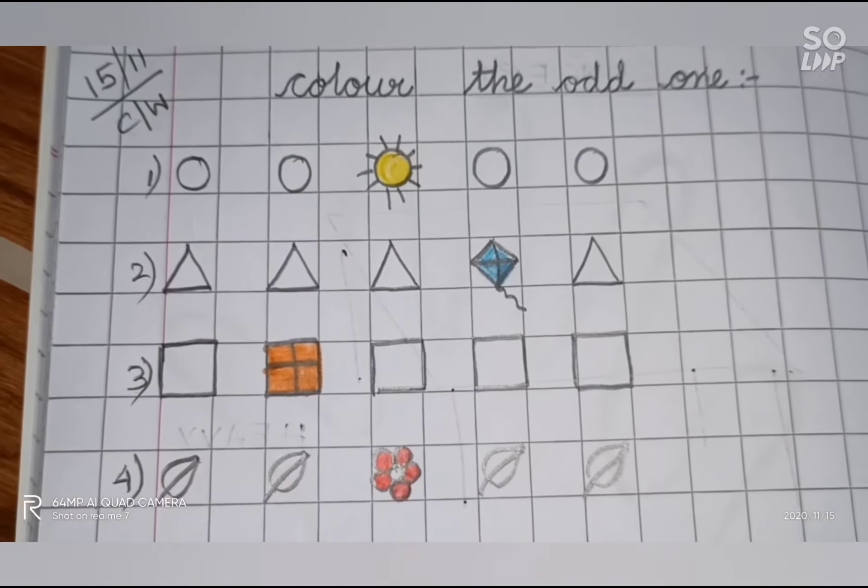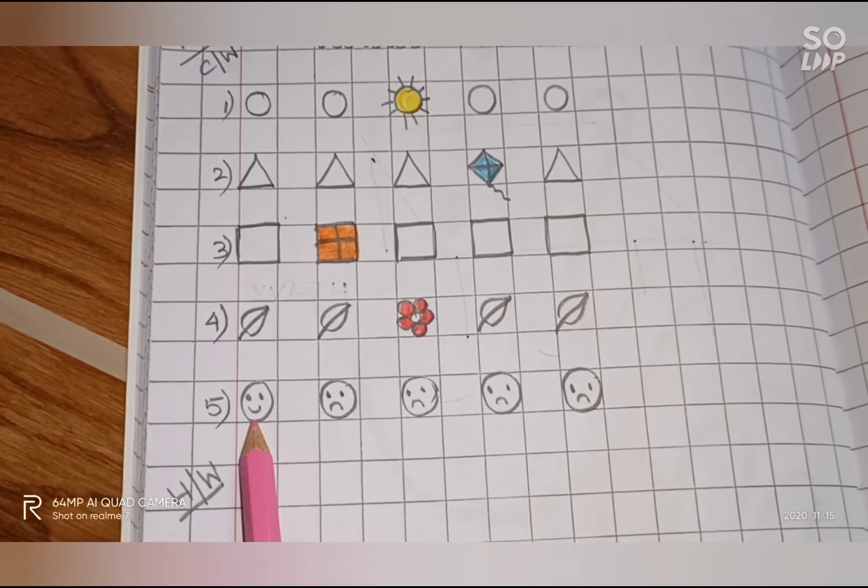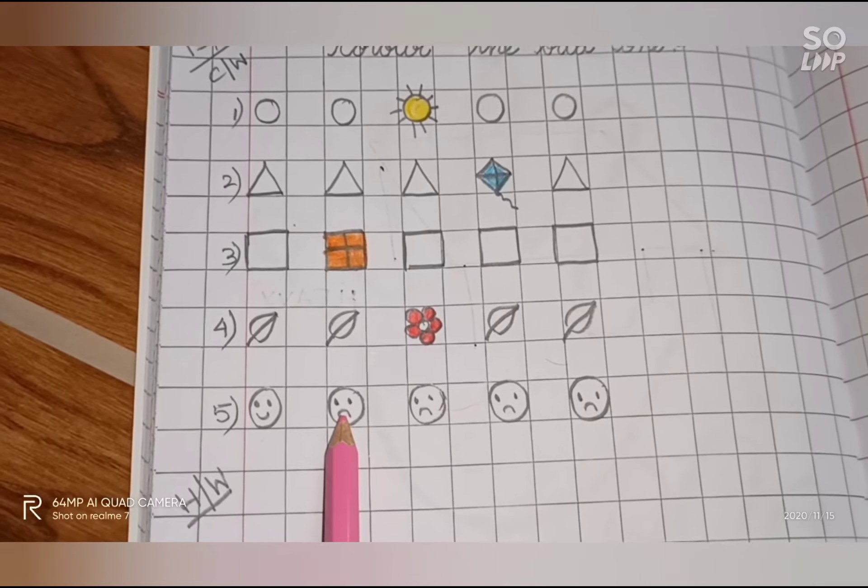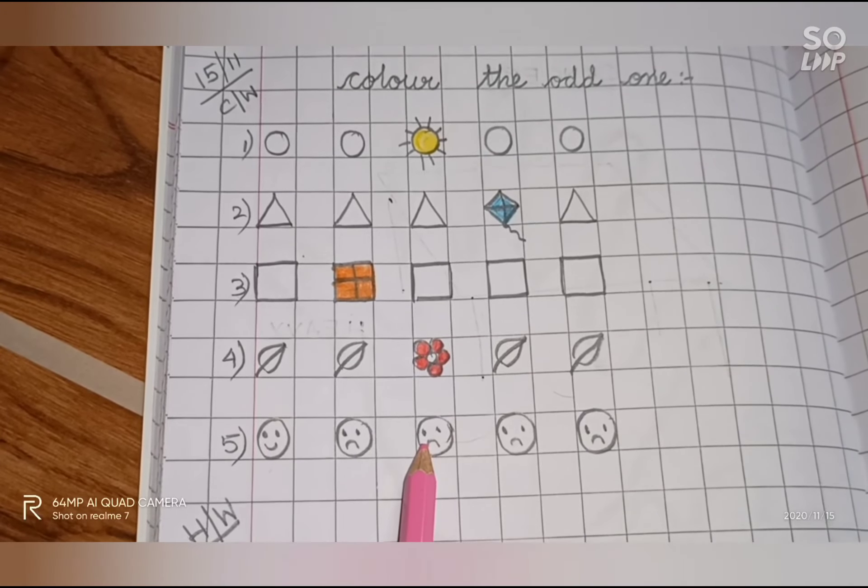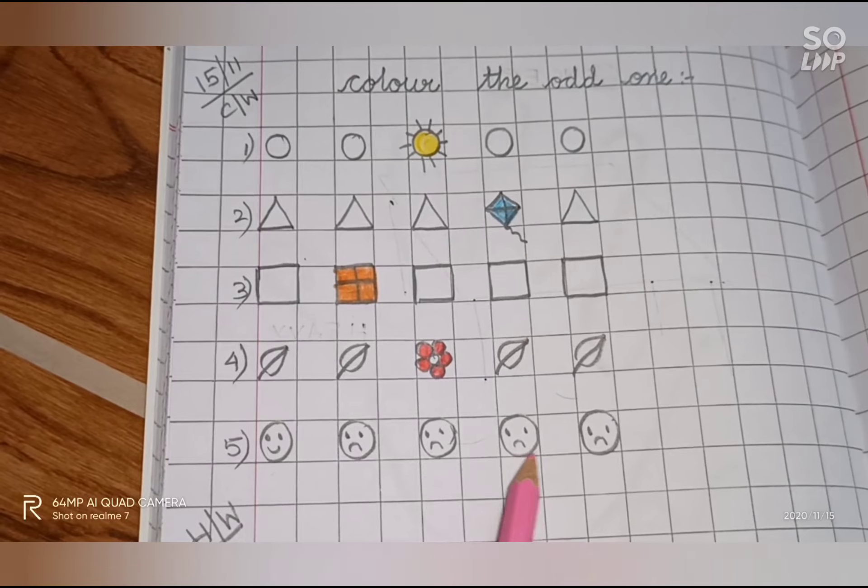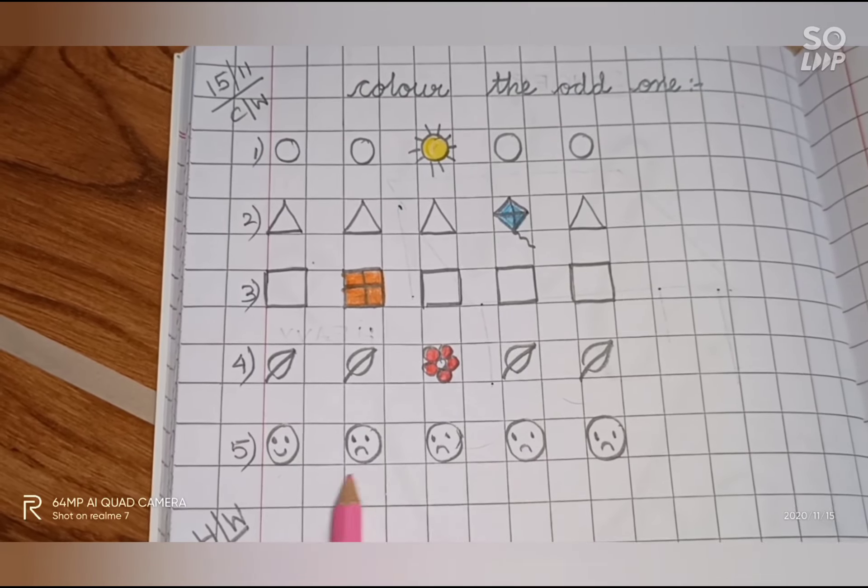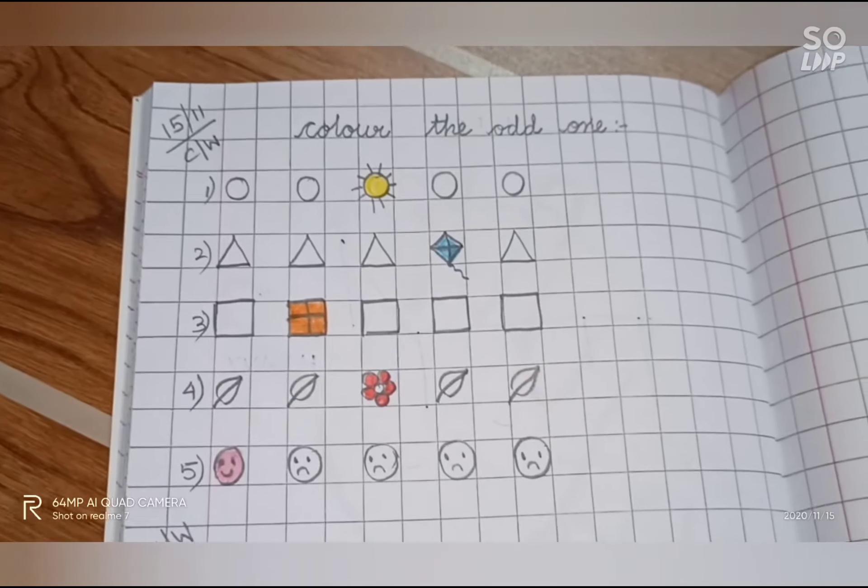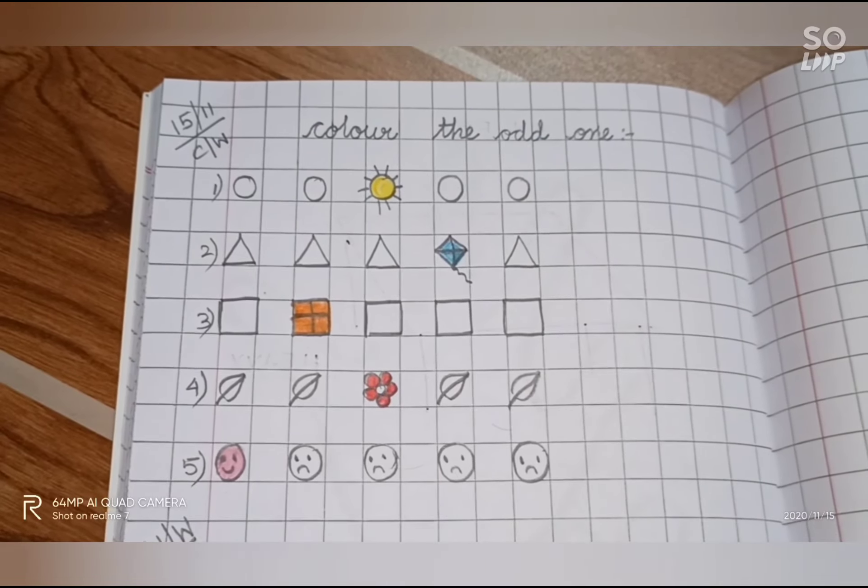Now, this is a smiling face. These are all sad faces. So which one is odd? The happy smiling face. So we have colored it like this.